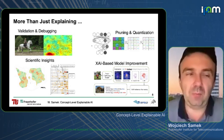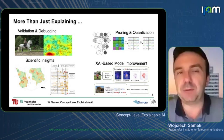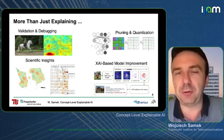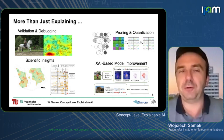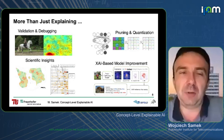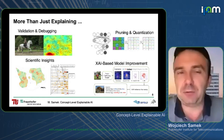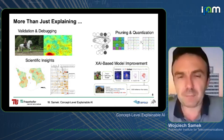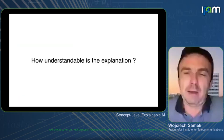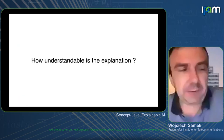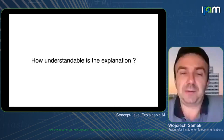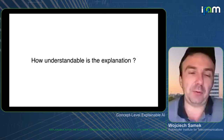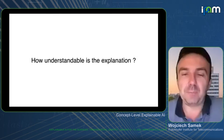I call this XAI 1.0 — this first generation of heatmaps can be used not only to explain and validate your predictors, but also to improve your model and get scientific insights. But of course, these attribution maps have limitations, and this is where our new work comes in. The question is: how understandable are these explanations?